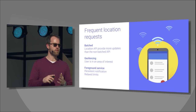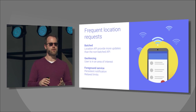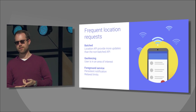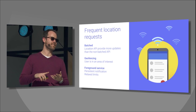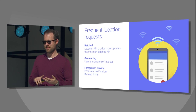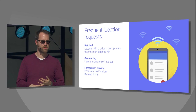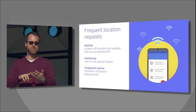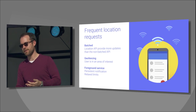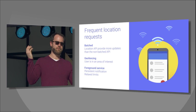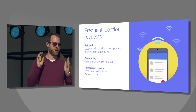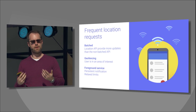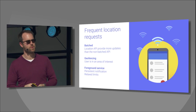There are a number of lower-battery-impact options you should look at: batching, geofencing, and as a last resort, the foreground service. If you're using a foreground service and the user understands what's happening — that's really critical. If they understand you're running in the background and it's expensive, they get it. You'll have relaxed requirements when you're in that mode.